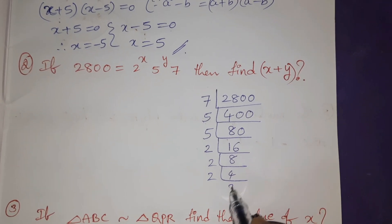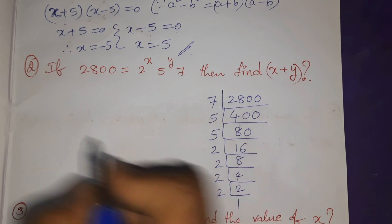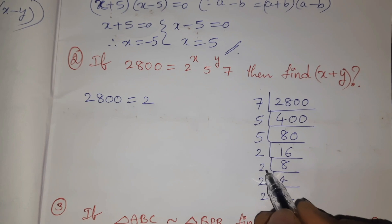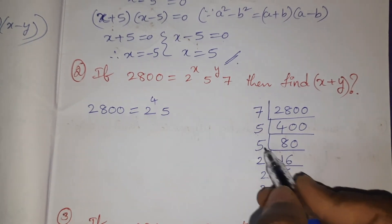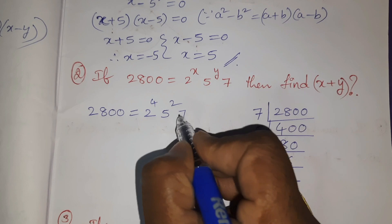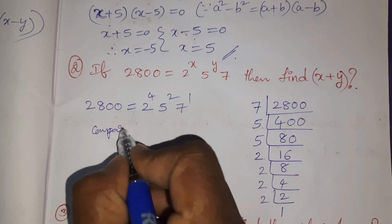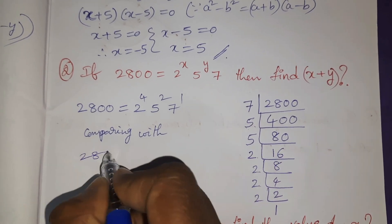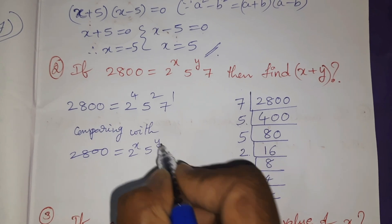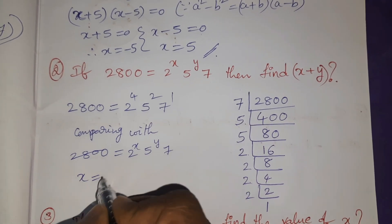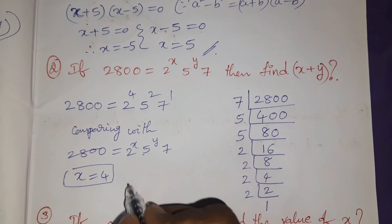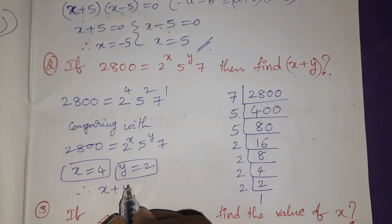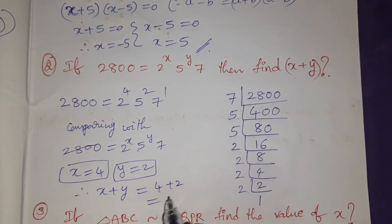2 into 2, 2 into 1. 2800 we can write as 2^4 × 5² × 7^1. Comparing with 2800 = 2^x × 5^y × 7, so x = 4, y = 2. 4 + 2, answer is 6.